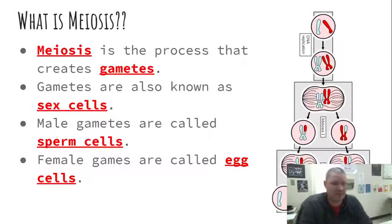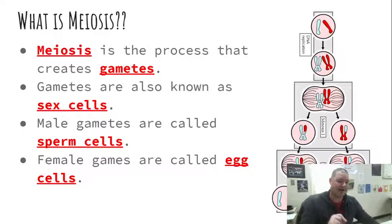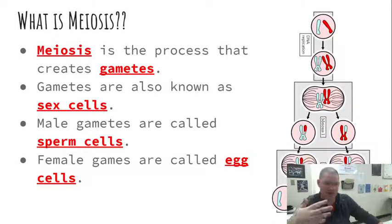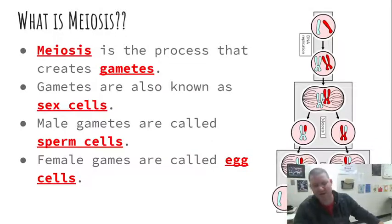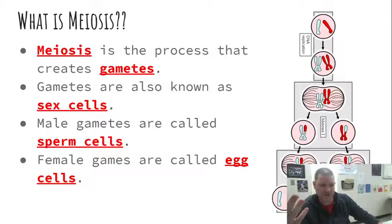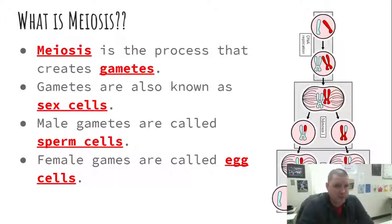Meiosis creates for us gametes. Gametes are also known as our sex cells. These are our reproductive cells for animals, plants, and fungi, if they have male and female characteristics. Some plants do end up having male parts and female parts to allow for the seed to develop. Male gametes are called sperm; female gametes are called eggs. There are going to be some special qualities that go along with these terms.